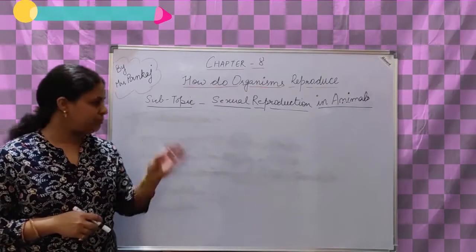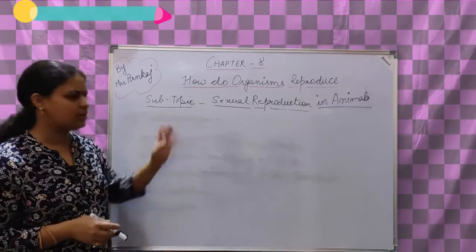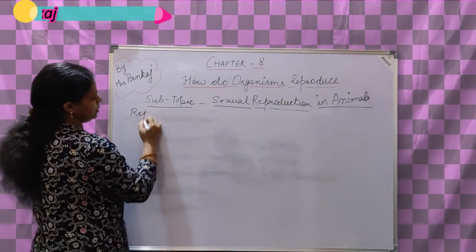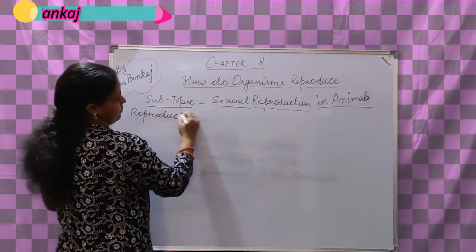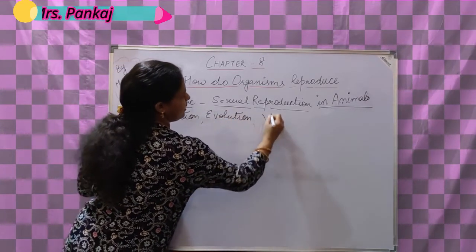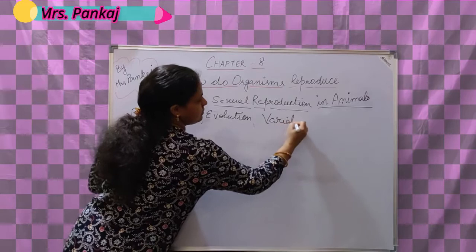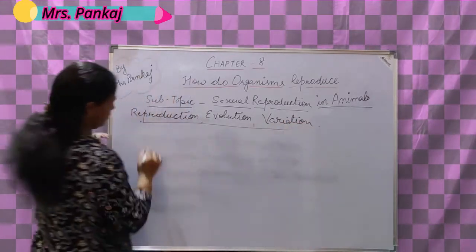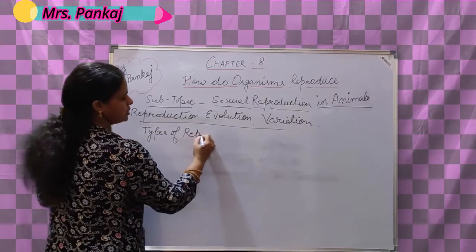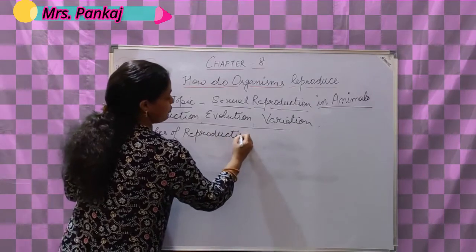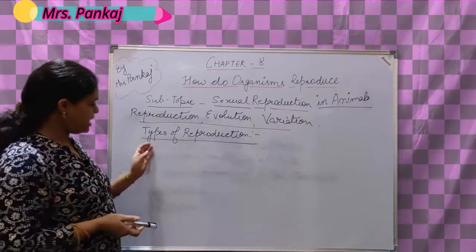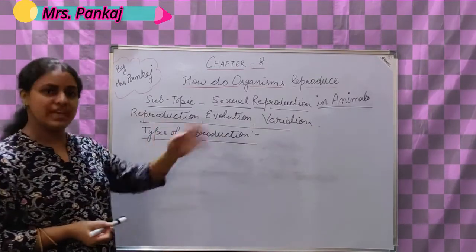So the basic terms used in this topic that we already have an idea about are: reproduction, evolution, and variation. Now we come to the very next thing - types of reproduction. It means if reproduction occurs, what are the ways? In how many ways does it occur? What are the types of reproduction?